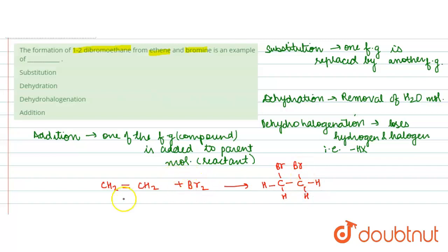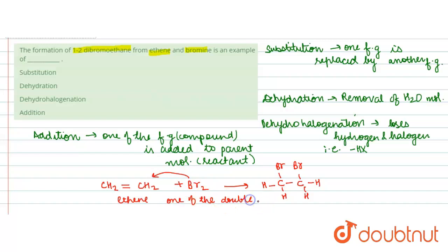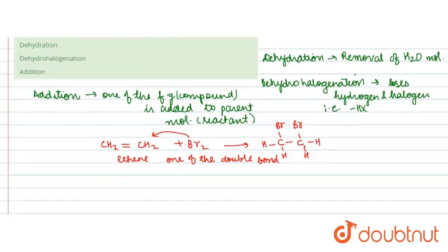When bromine is added to ethene, one of the double bonds of ethene is broken down.